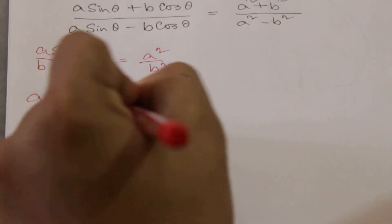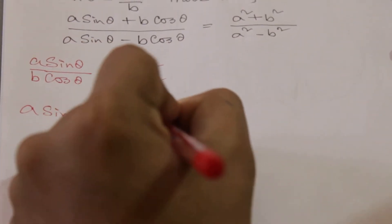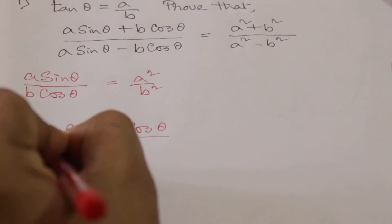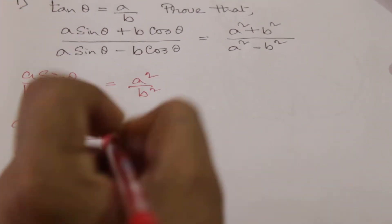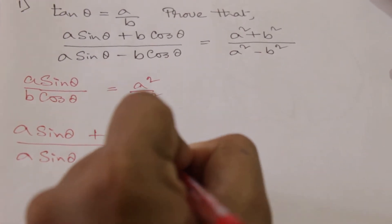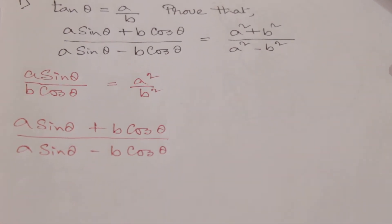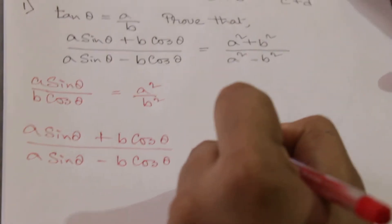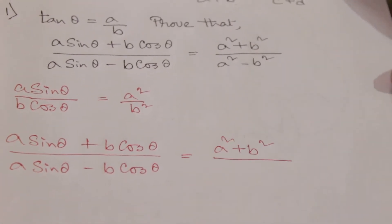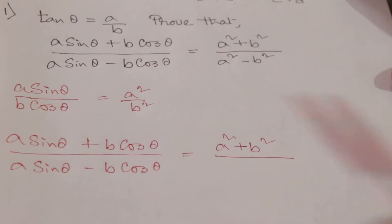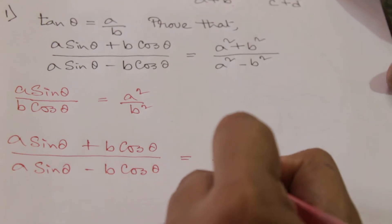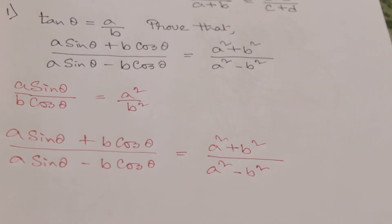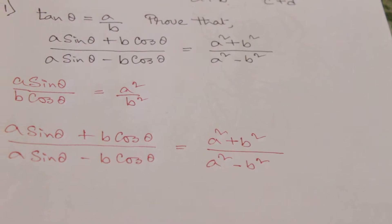That means it will become (a sin θ + b cos θ)/(a sin θ - b cos θ) on the left side, and on the right-hand side it will become (a² + b²)/(a² - b²) — numerator plus denominator over numerator minus denominator. This is how we solve this type of problem.